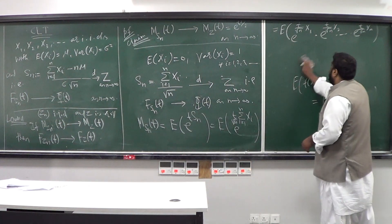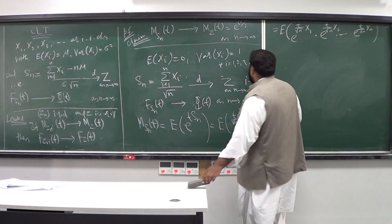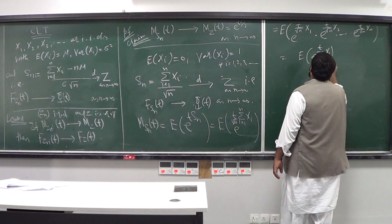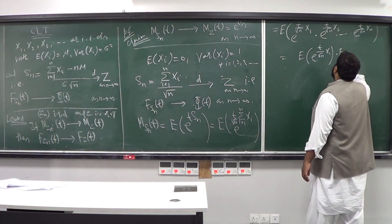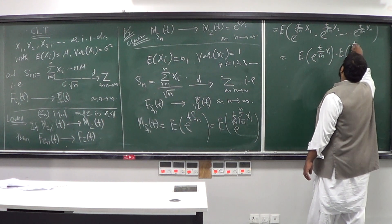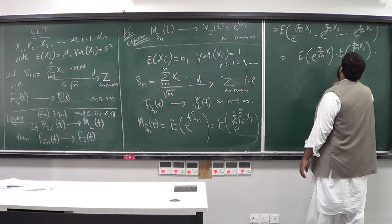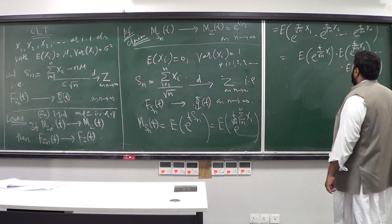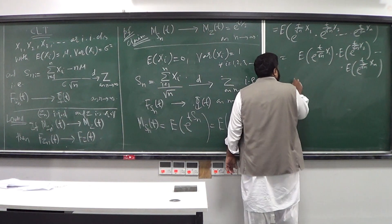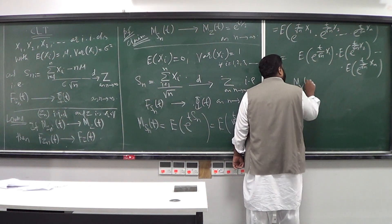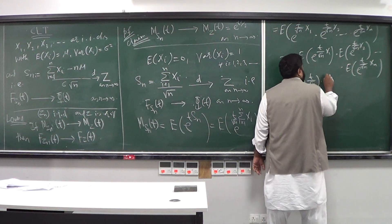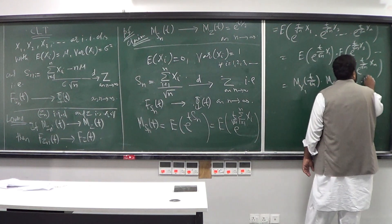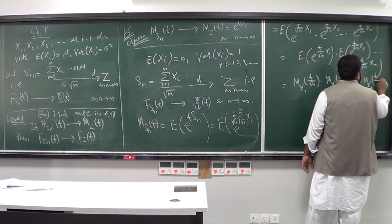Applying this independence result, the expectation of the product factors as: E[e^((t/√n)·X₁)] times E[e^((t/√n)·X₂)] times ... times E[e^((t/√n)·X_n)]. This is the same as computing the moment generating function of X₁ at t/√n, times the MGF of X₂ at t/√n, all the way up to the MGF of X_n at t/√n.